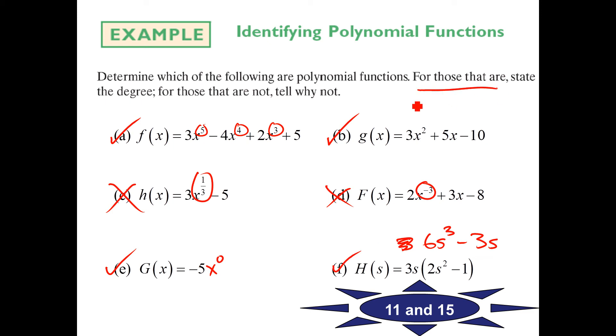For those that are, state the degree. So the degree of A is 5, the biggest power you can find. The degree on B is 2. Let's skip to H here, the degree would be 3. And then coming back to E here, what's the degree? The degree is 0. So if you're a constant, the degree is 0. All right, and 11 and 15 are yours to try.